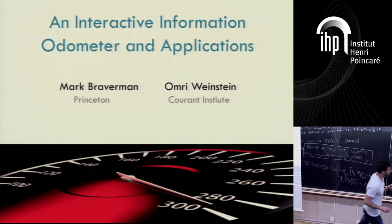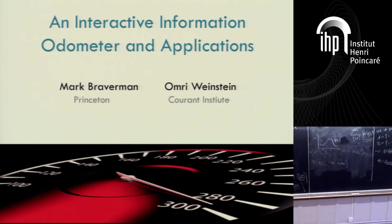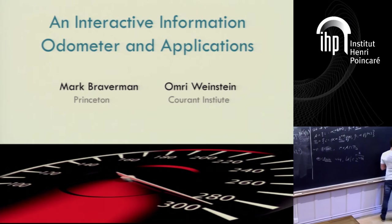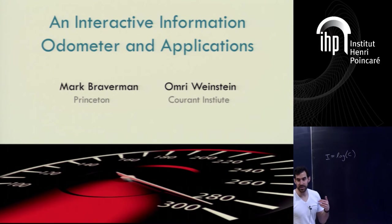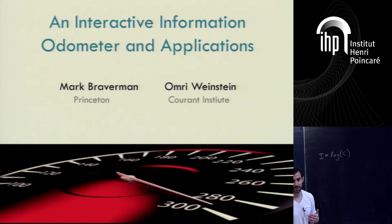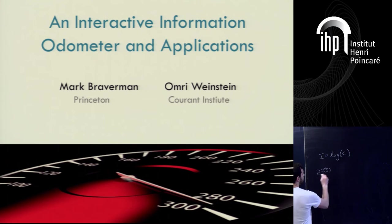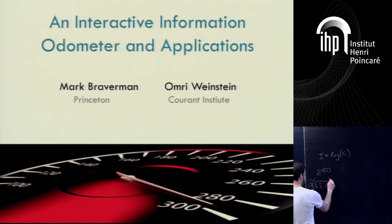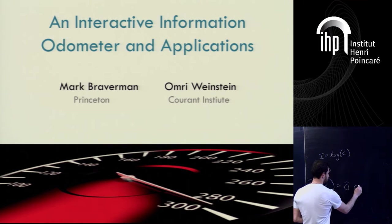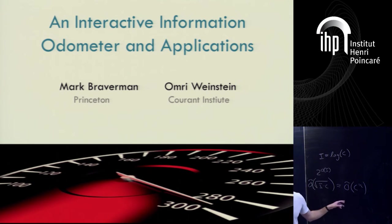In particular, in my opinion, the regime where i equals log C — so if the information is logarithmic in the communication — neither of these schemes performs great. The 2^i scheme is hopeless, because 2^(log C) is C, so it leaves you right back where you started. And the square root scheme gives you roughly C to the half in this regime.